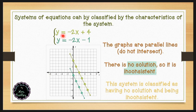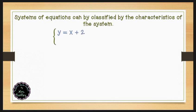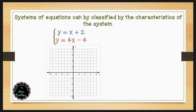Let's look at another example. If we have the system y equals x plus 2 and y equals 4x minus 4, these equations are also in slope-intercept form. For the first equation, our slope is 1 and our y-intercept is at positive 2, or the point (0, 2). With a slope of 1, we will continue making points going up 1 and to the right 1.